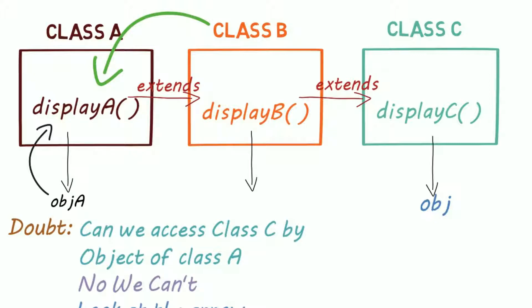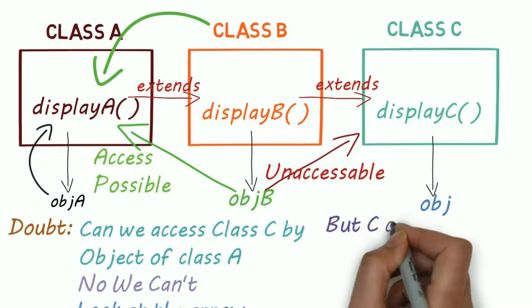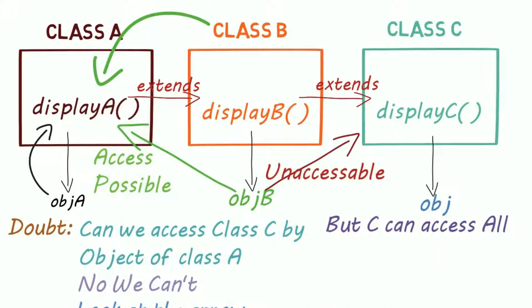Suppose I have created an object of class B. This object can access class A methods as well as its own class B methods, but it can't access the class C methods. Now, class C object can access all the public methods and variables of class A and B as well.